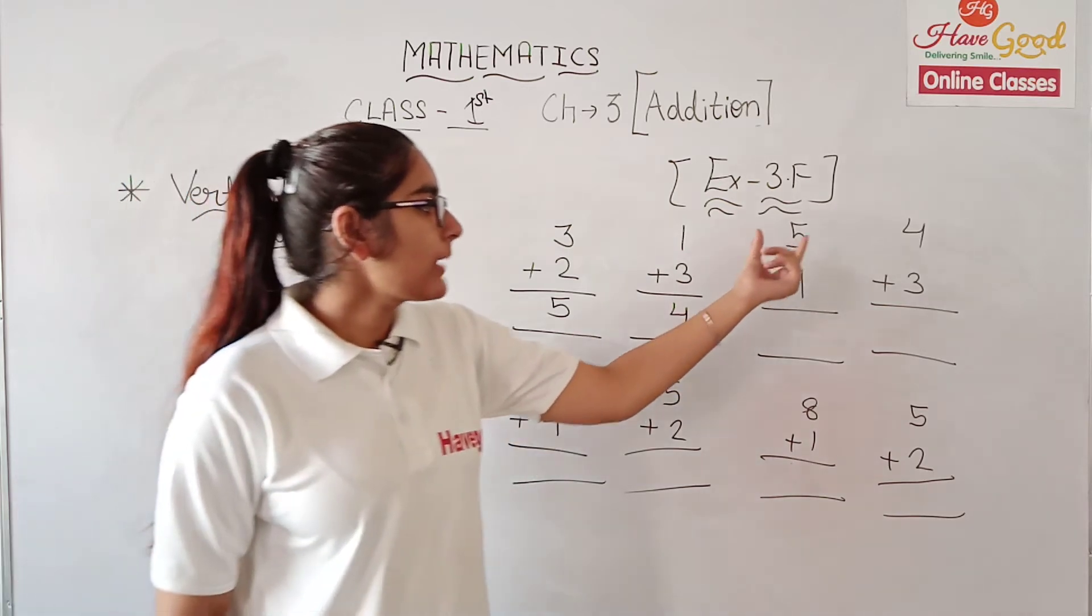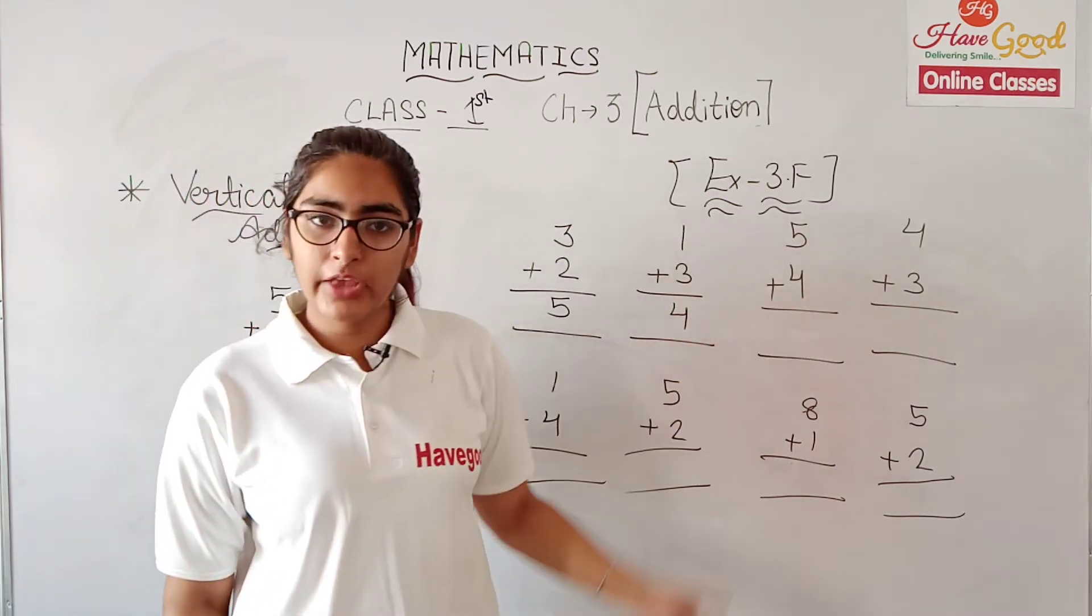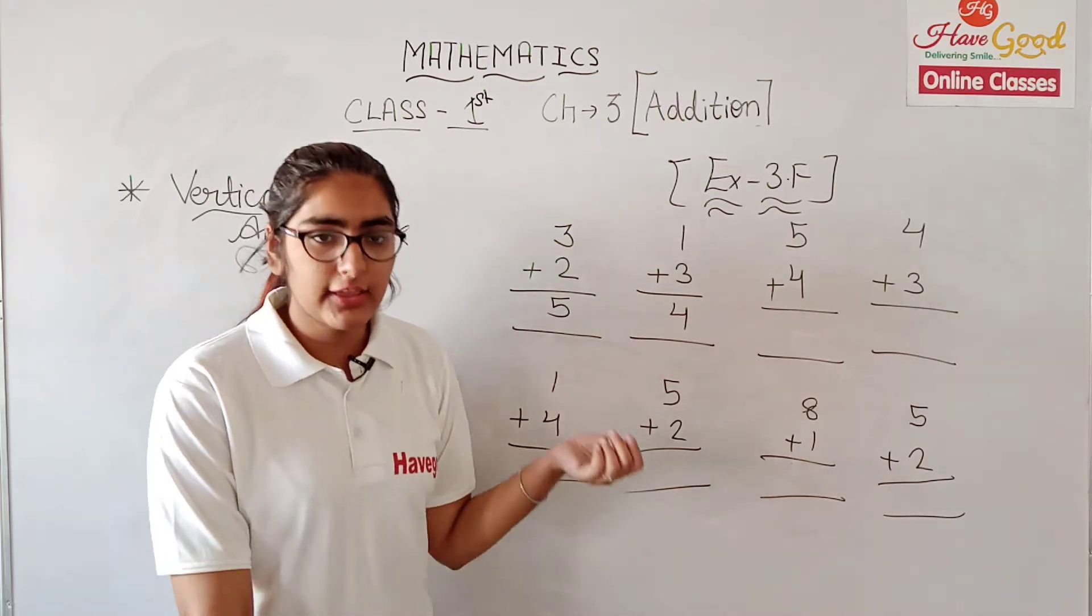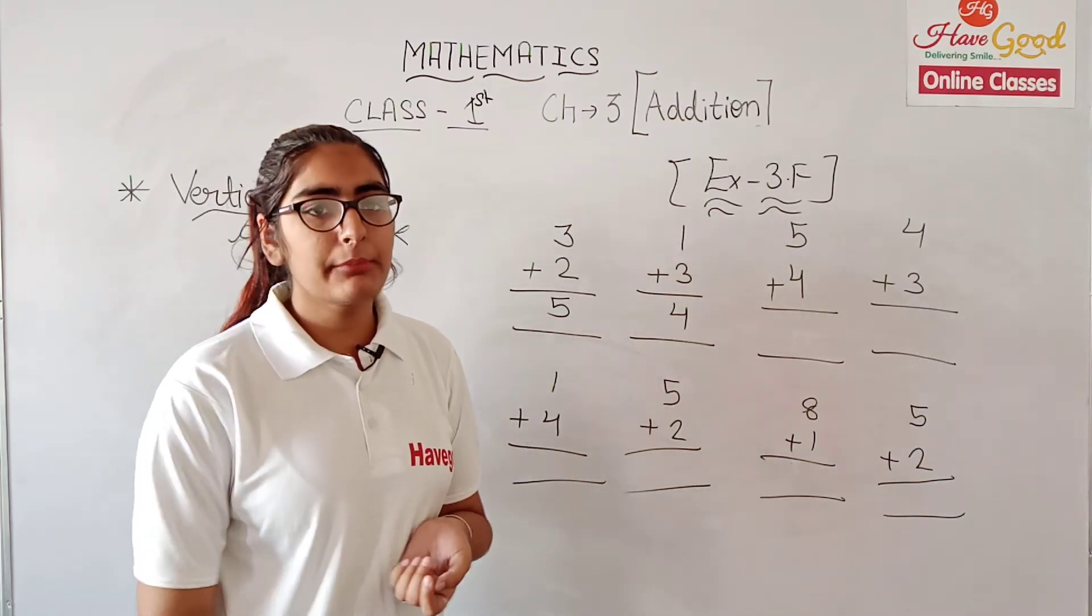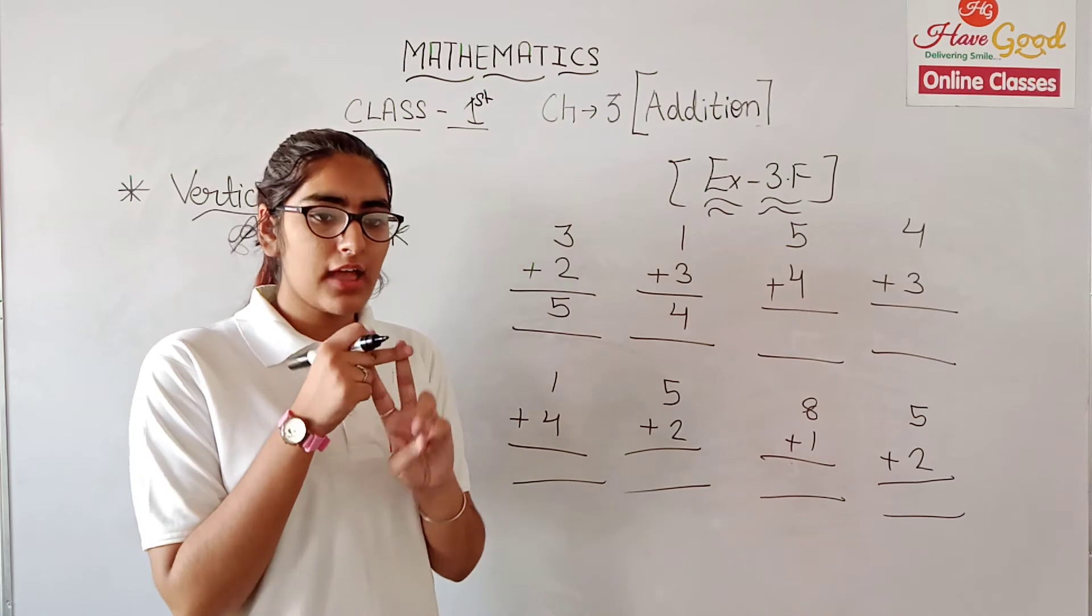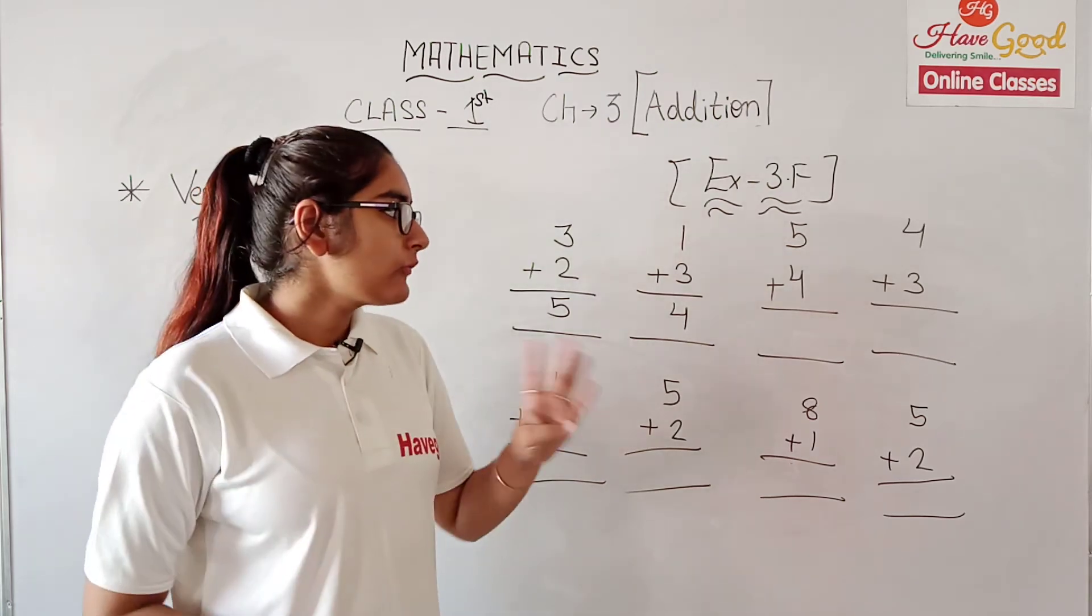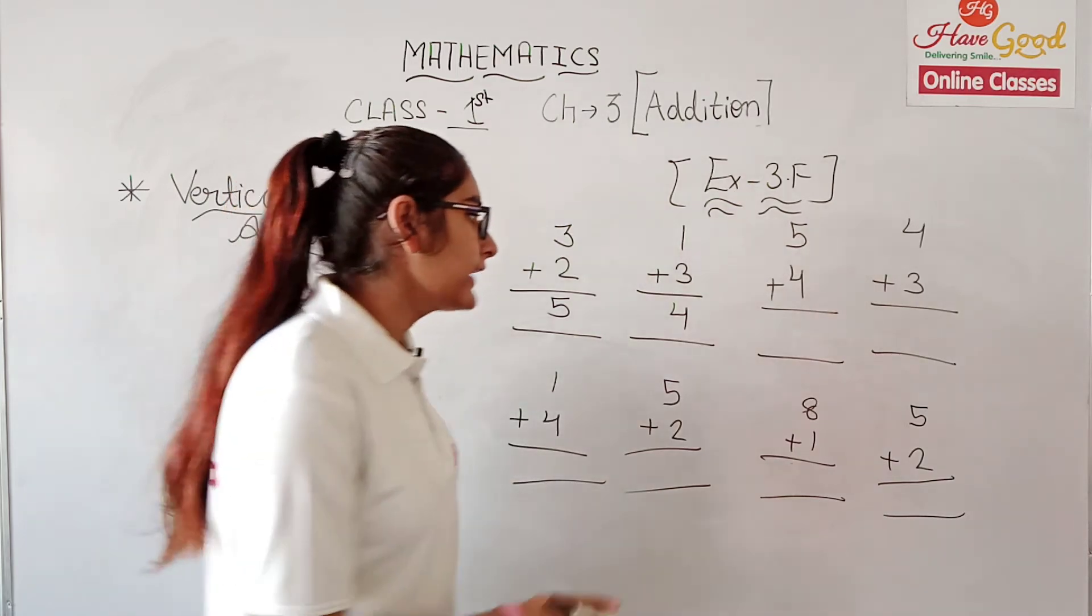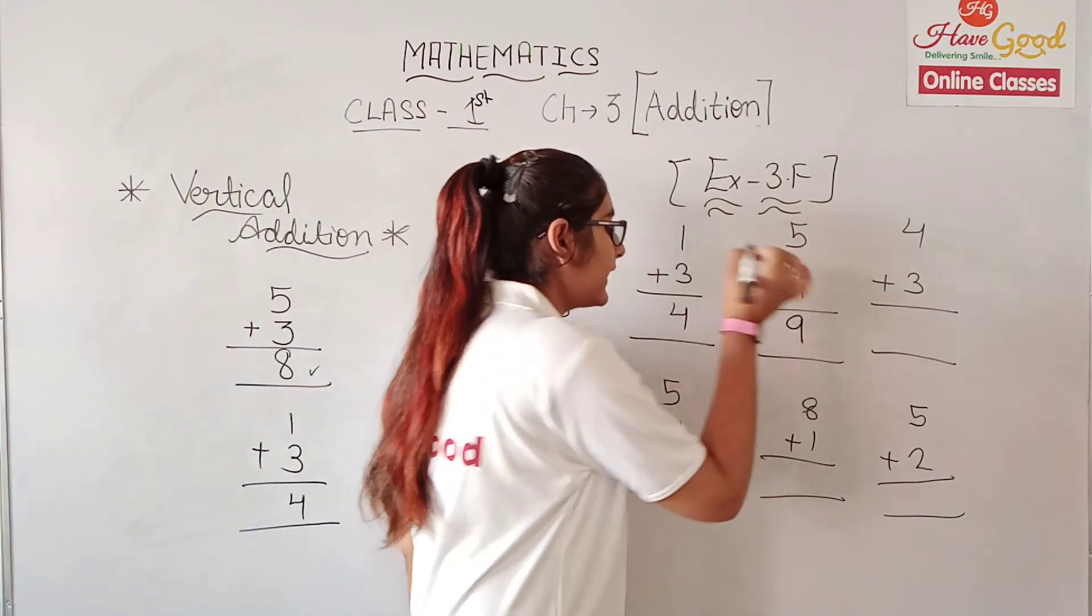Now we have 5 plus 4. So we start at 5 and go forward counting 4: 6, 7, 8, 9. Then our answer is 9.